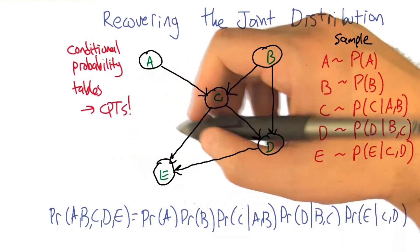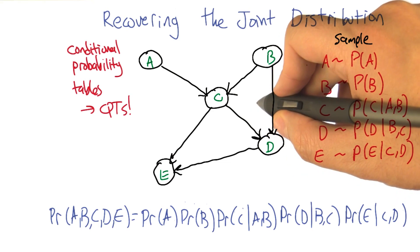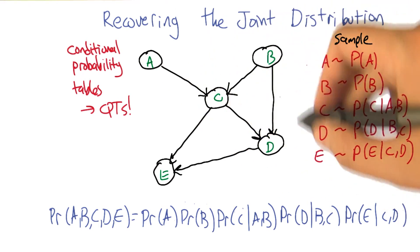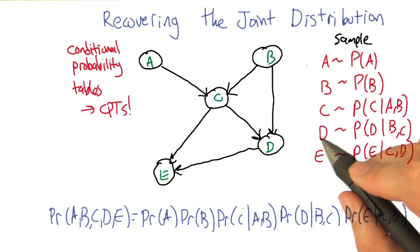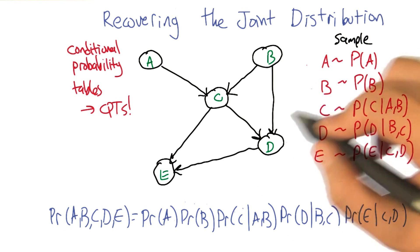But we can actually go the other direction as well. We can go from the values in these conditional probability tables at each of the nodes to computing the probability of any joint combination of variables that we want. It turns out it's really simple. We can use these same ideas and say,